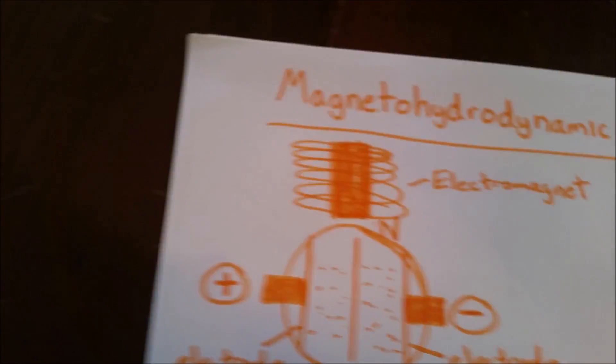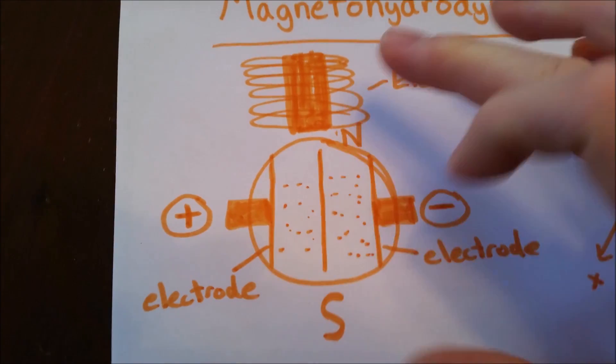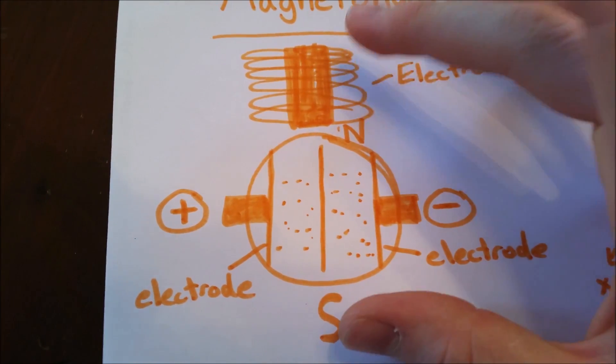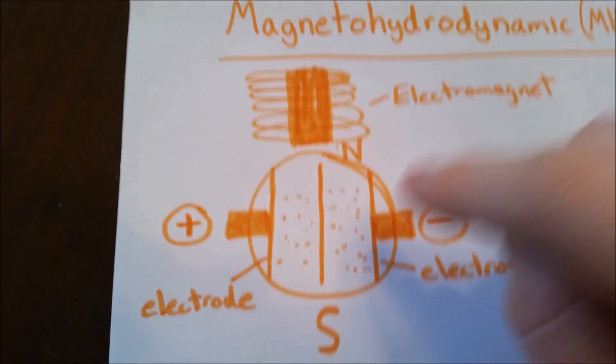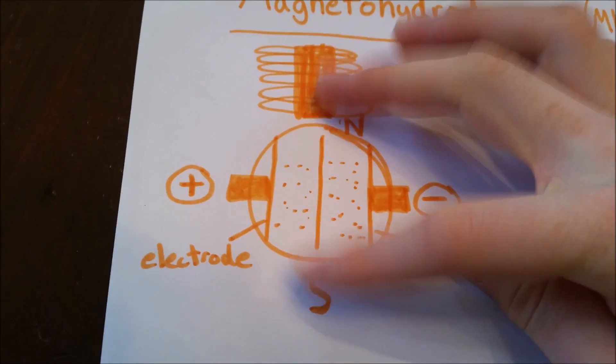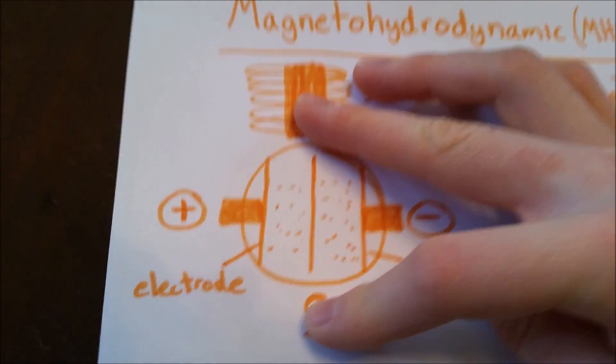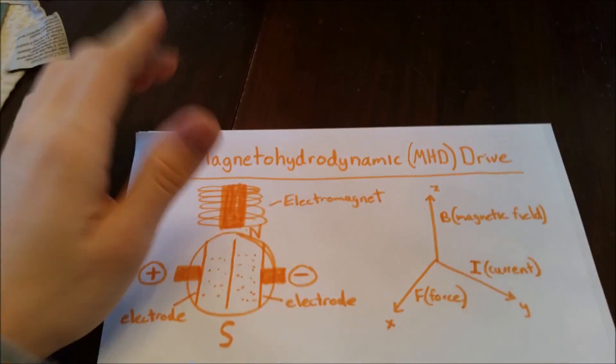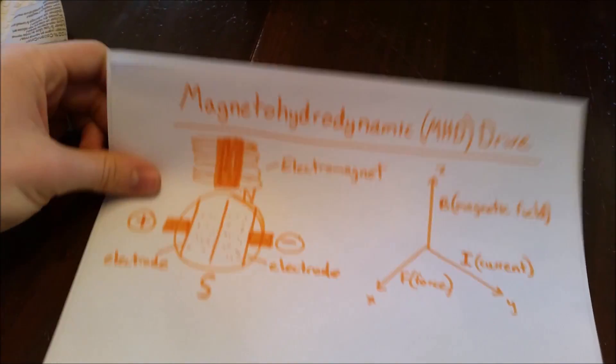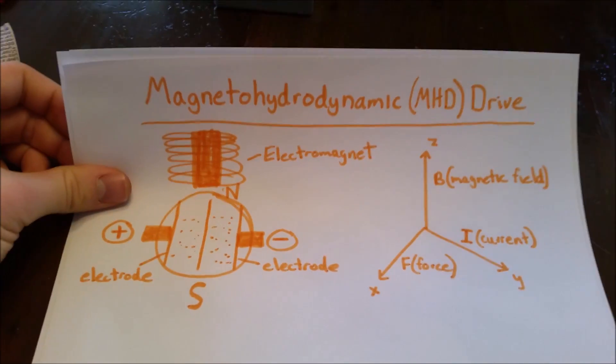If you flip this, your current flows different ways. You flip the electromagnet, the force that the electrons experience is the opposite way. You can flow into the page or out of the page depending on which way this goes. That's the science behind magnetohydrodynamic drive, and now we're going to show you how our system works.